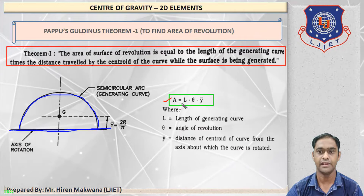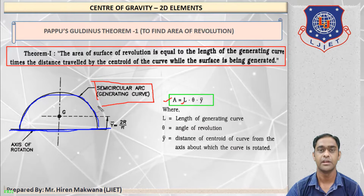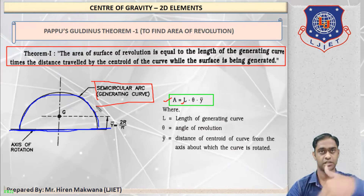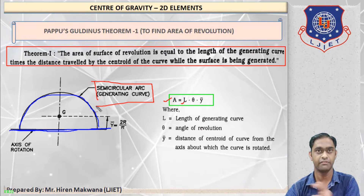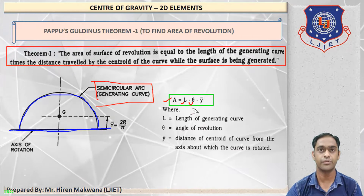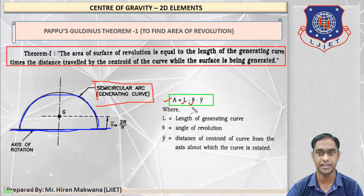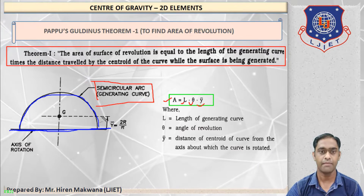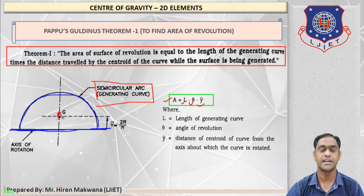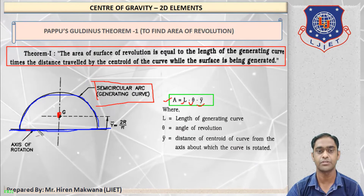L means the length of the semi-circular arc which is being revolved about the axis. That length we put into the formula. θ means the angle of revolution, so θ is 360 degrees. ȳ is the distance of the center of gravity from the reference axis — that is, from the axis of rotation.